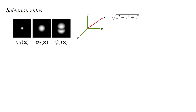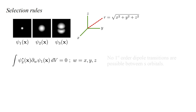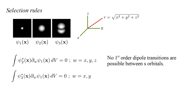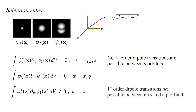For the wavefunctions we have examined, the integrals for transitions between 1s and 2s orbitals are all zero, and in general no first-order dipole transitions are possible between s orbitals. By first order, we mean the first-order form of Fermi's golden rule. For transitions between the 1s and 2pz orbitals, the x and y integrals are zero, but the z integral is not. In general, first-order dipole transitions are possible between s and p orbitals.